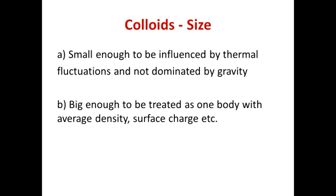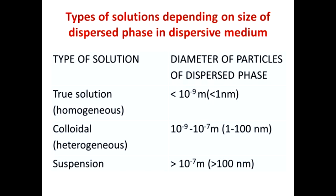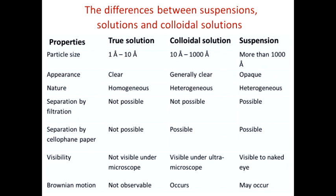Colloidal solutions have particles small enough not to settle and big enough to be classified as heterogeneous particles. True solutions have the smallest particles, which are less than one nanometer — they are ions and molecules. The size of colloidal particles is between one and one hundred nanometers, and suspensions have particles bigger than 100 nanometers.